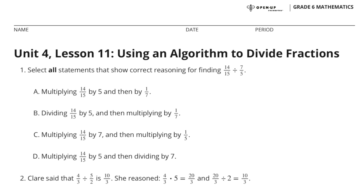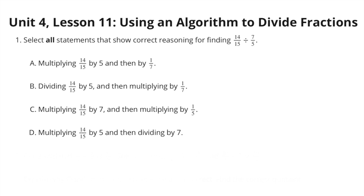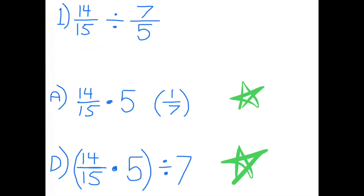Unit 4 Lesson 11: Using an Algorithm to Divide Fractions. Problem 1: Select all statements that show correct reasoning for finding fourteen-fifteenths divided by seven-fifths. The correct answers are A: fourteen-fifteenths times 5 times one-seventh, and D: fourteen-fifteenths times 5 divided by 7.